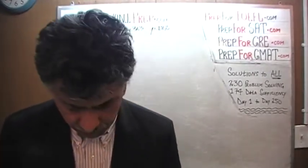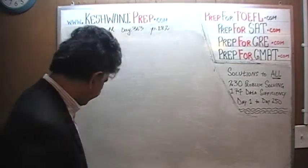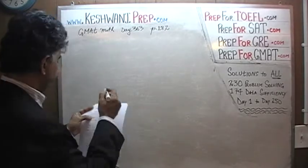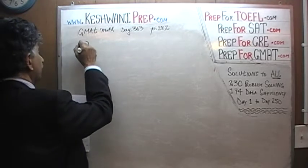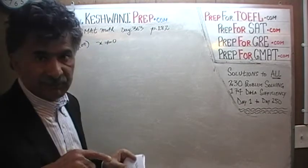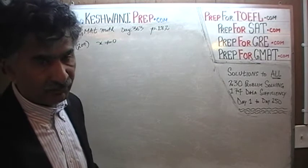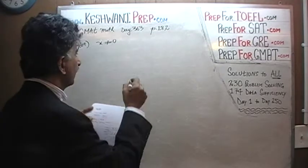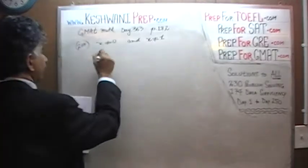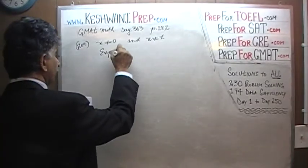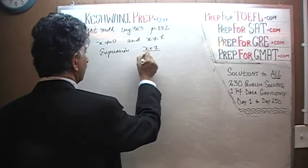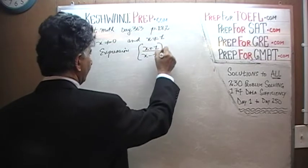The very first problem that you see there on page number 182 is number 209. In number 209, we are told that we have some quantity x which does not equal 0. Obviously, somewhere down the road they are dividing by x. And we are also told that x does not equal 1. Here is the expression: x plus 1 over x minus 1, whole squared.